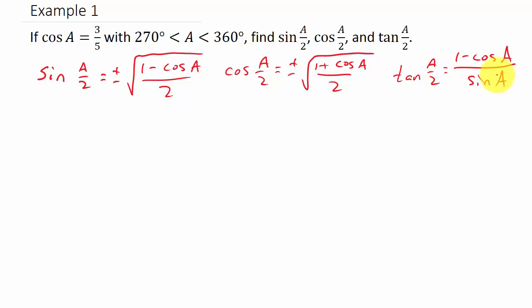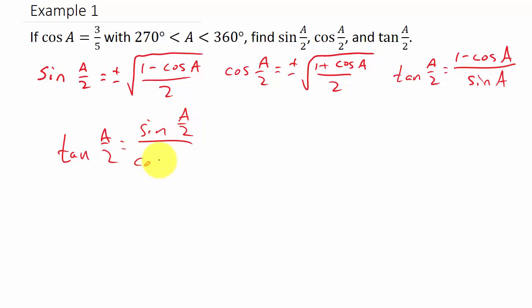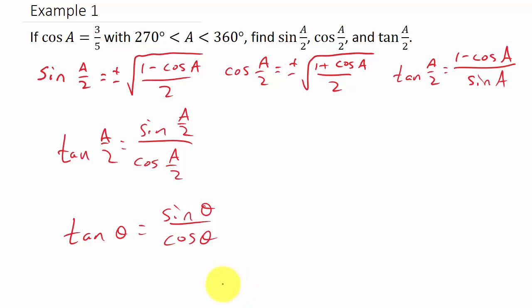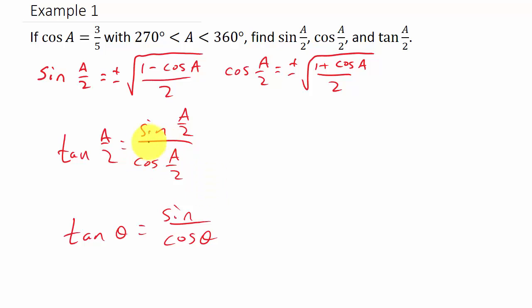For tangent of a/2, the formula requires both cosine a and sine a, but we're only given cosine a. However, we don't really need to find sine a separately, because tangent of a/2 is just sine of a/2 divided by cosine of a/2 — since tangent θ equals sine θ over cosine θ. So once I find sine of a/2 and cosine of a/2, I can just divide them to get tangent of a/2 without needing the half angle identity for tangent.